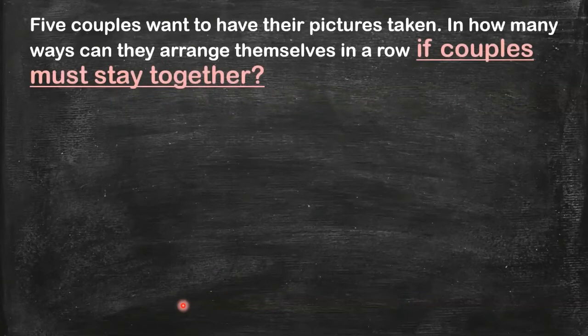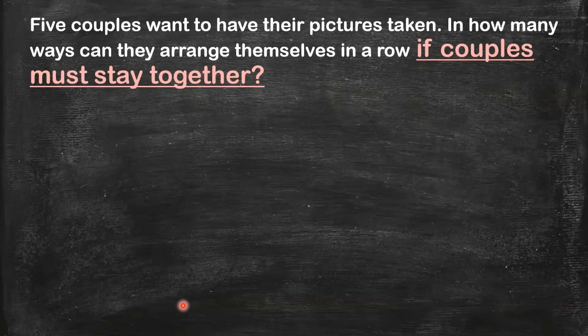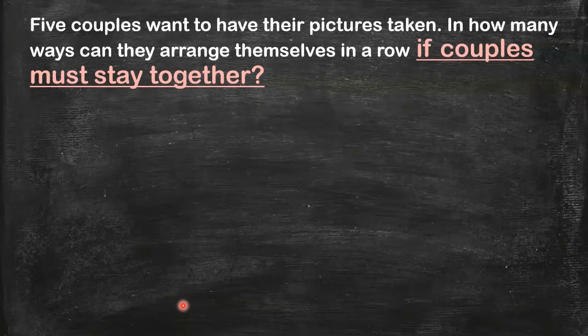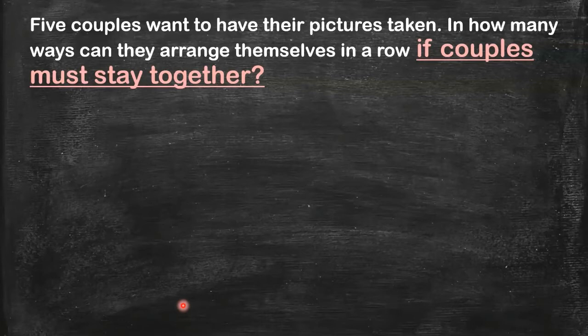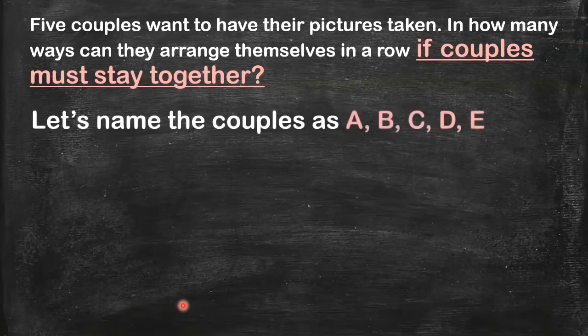What about this? We have a different condition here. Still, we have five couples, but this time, instead of standing anywhere, couples must stay together. So let's first name all the five couples. Let's name them as A, B, C, D, E. So it's like couple A, couple B, couple C, couple D, couple E.